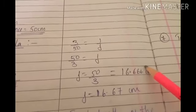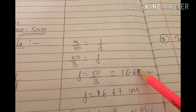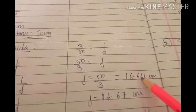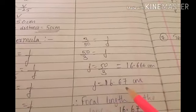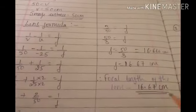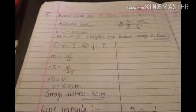The third digit is more than 5, so increase the second digit by 1. Instead of 6, write 7. So F is 16.67 cm. The focal length of the lens is 16.67 cm. We have found both V and F. Thank you.